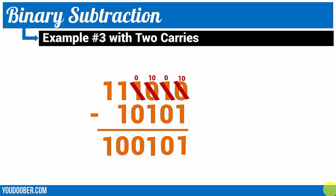Let's convert to decimal. 32 plus 16 plus 8 plus 2 equals 58. 16 plus 4 plus 1 equals 21. In our answer we have 32 plus 4 plus 1, that's 37. 58 minus 21 equals 37, so we know that to be correct.